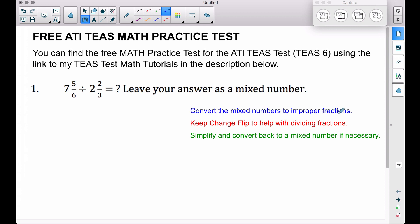The first thing is convert the mixed numbers to improper fractions. So we have 7 and 5/6 divided by 2 and 2/3. Seven and 5/6, if we take the 6 times the 7 that gives us 42, 42 plus 5 gives us 47 over 6.